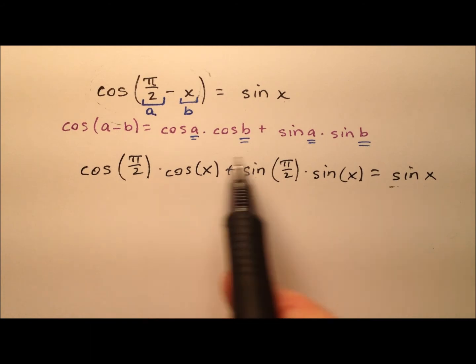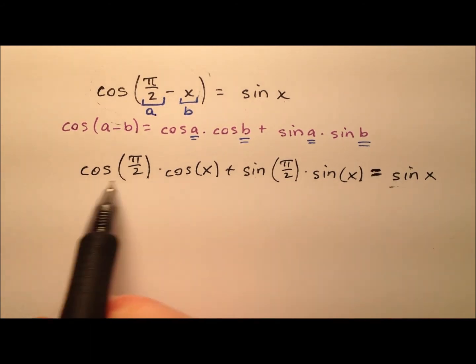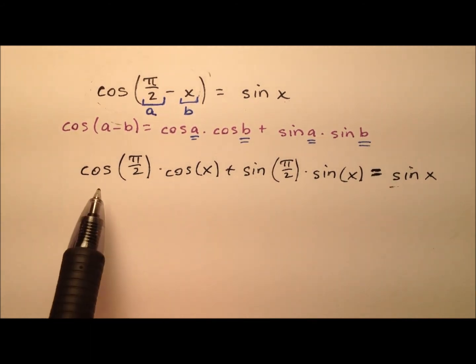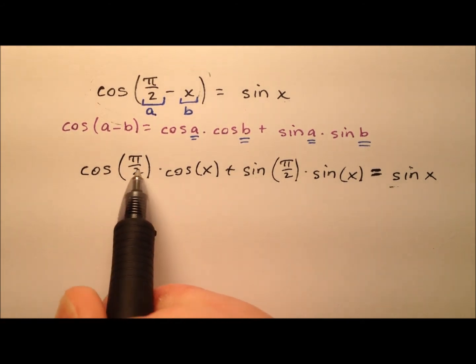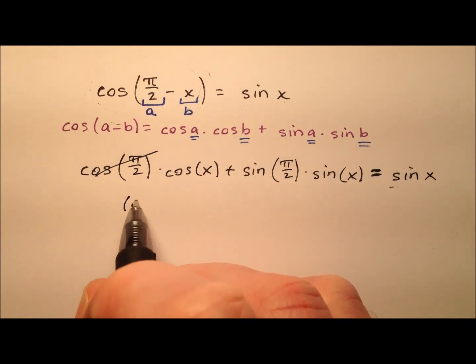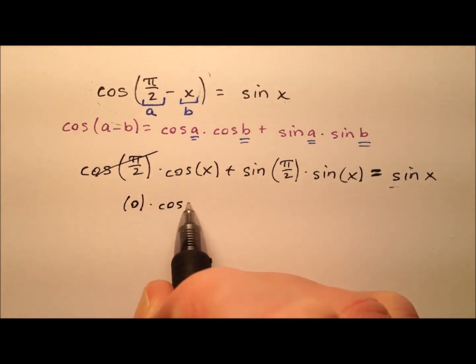Let's take this left side of the identity and whip it into shape. So we know the cosine of pi over 2 is going to be 0, because the cosine of 90 is 0, so we have 0 times cosine x,